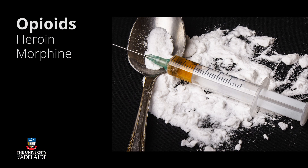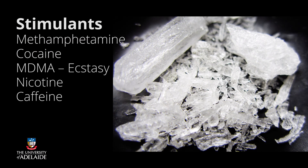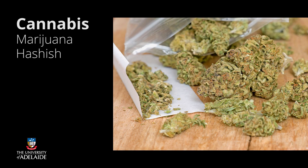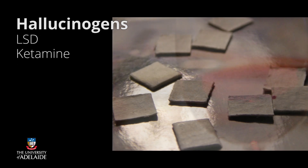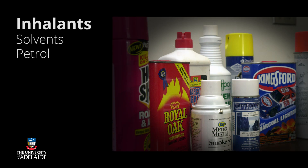There are several ways to classify them, but we'll keep it simple here. We can group them as opioids such as heroin and morphine; stimulants such as methamphetamine, cocaine, MDMA or ecstasy, nicotine and caffeine; cannabis; sedatives such as alcohol, benzodiazepines, GHB or fantasy; hallucinogens such as LSD and ketamine; and others such as inhalants, solvents and petrol.